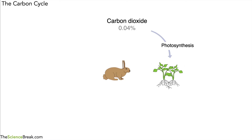But animals can't do that — animals can't take carbon dioxide out of the atmosphere and make their own body tissue. So they have to get those materials that have been made by the plant, so they eat plants. Many types of animals eat plants, which is called feeding, consuming, or eating. So the carbon in those compounds goes into a living thing, for example a rabbit, and that's how the rabbit gets the materials it needs.